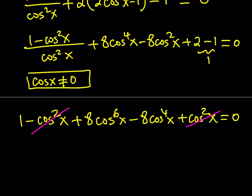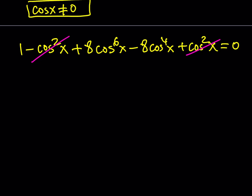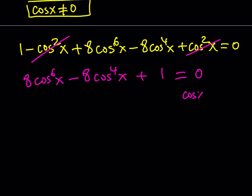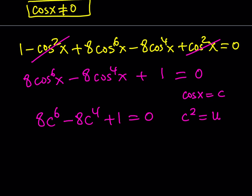Notice that all the powers are even, which means we can do substitution. Let's call cosine x as c, so we have 8c to the sixth power minus 8c to the fourth power plus 1 equals zero. This is sixth degree, but since powers are even, we substitute u equals c squared, giving us 8u cubed minus 8u squared plus 1 equals zero — a cubic equation, which is much better.